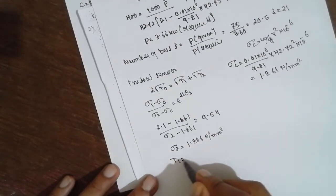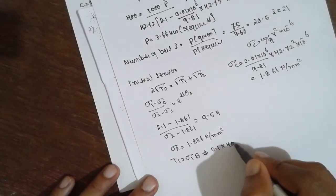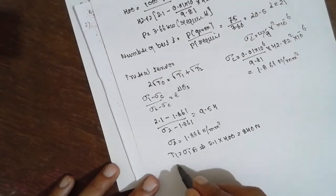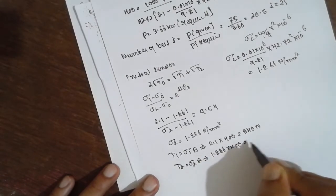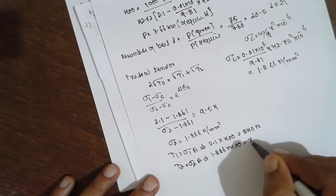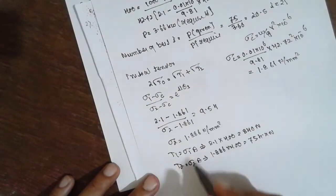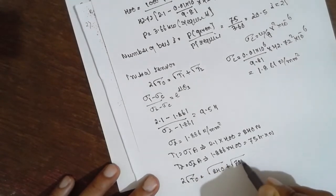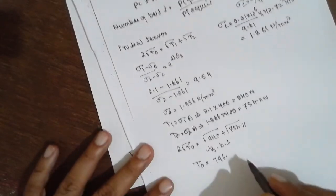Now T1 is nothing but sigma_1 into A. Sigma_1 is 2.1 into A is nothing but 400, therefore it will be 840 Newtons. T2 will be sigma_2 into A, 1.886 into 400, it will be 754.4 Newtons. Substitute in the above formula: 2*T0 = 840 + 754.4. Squaring both sides, you will get T0 is equal to 796.64 Newtons.